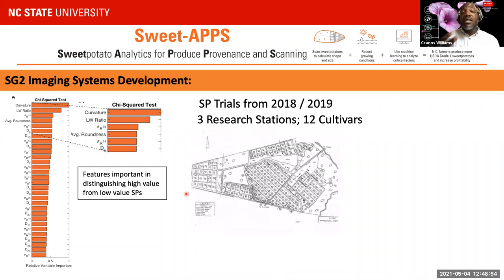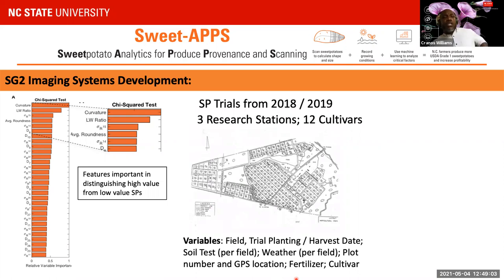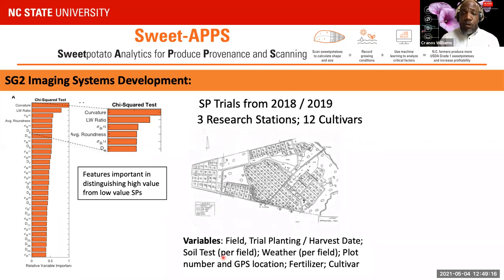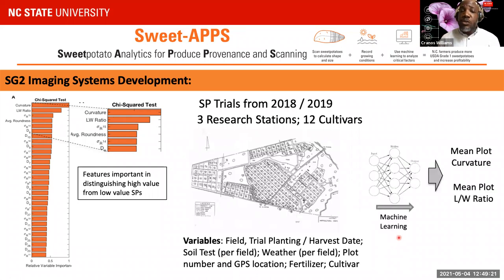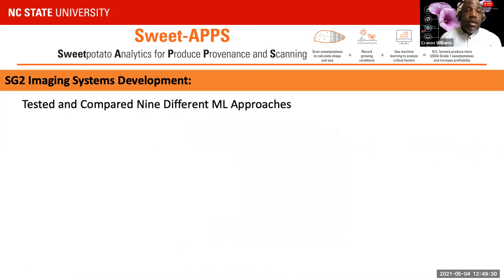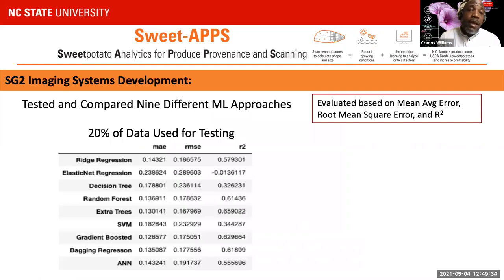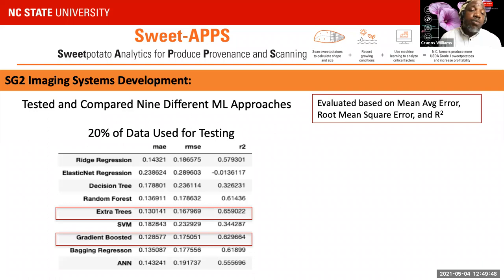One goal was to assess to what extent we could predict curvature and length-to-width ratio from provenance data. We looked at data from two sweet potato trials conducted in 2018 and 2019, collecting variables such as field location, trial planting and harvest dates, soil tests, weather, plot number, and plot location. Comparing about nine different machine learning approaches, we found that extra trees and gradient boost approaches performed best, with R-squared values of 66 and about 63 respectively. This says a lot given the limitations in data particularly from a spatial and temporal sampling standpoint.